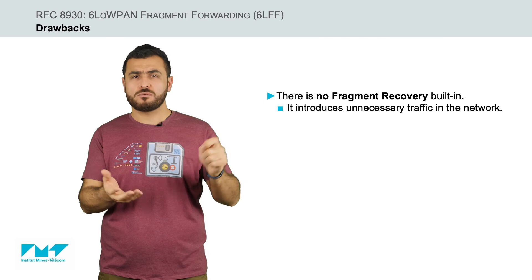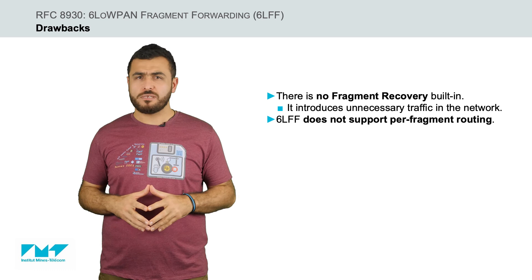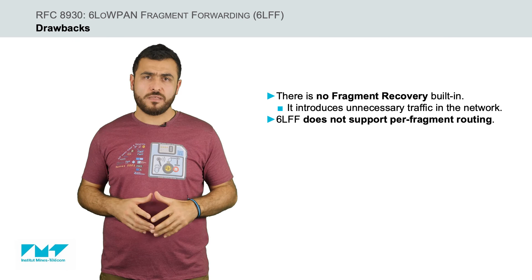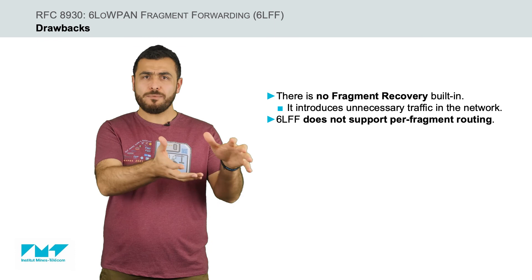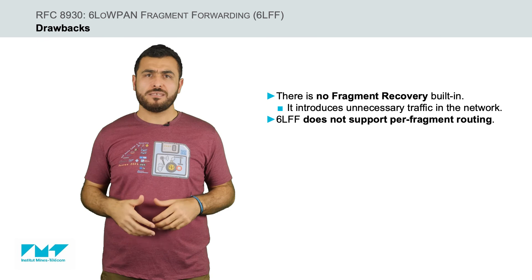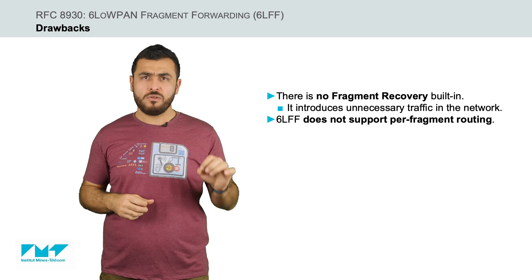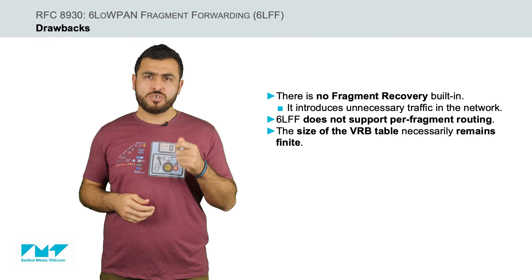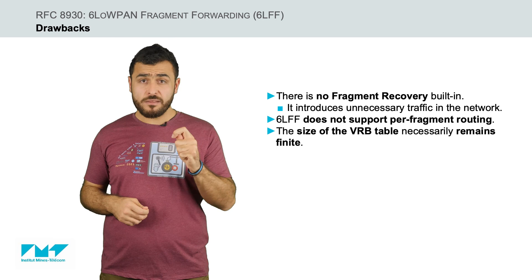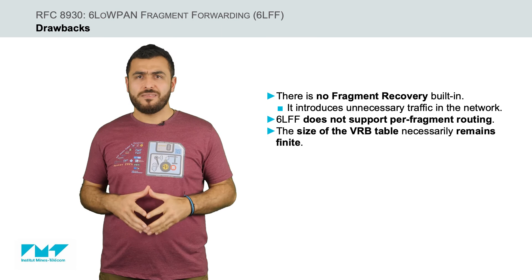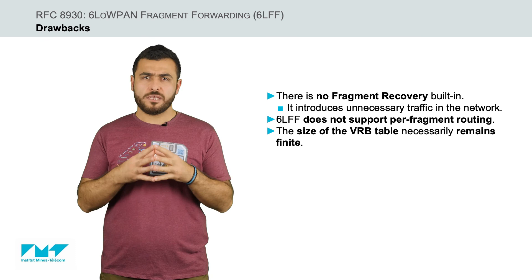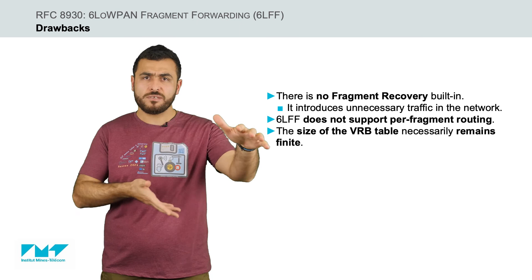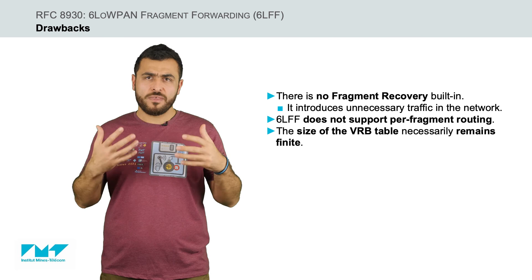Next, 6LoWPAN fragment forwarding does not support per-fragment routing. Since only the first fragment contains the IPv6 header and thus the IPv6 destination address, all subsequent fragments must follow the same path toward the destination as the first fragment. A side effect is that the first fragment must always be forwarded first. Finally, even though each entry reserves a small footprint in the VRB table, there is a probability for IPv6 packets to be dropped. Indeed, the size of the VRB table necessarily remains finite. Thus, in the extreme case where the number of IPv6 packets concurrently traversing an intermediate node is larger than the number of entries in its VRB table, IPv6 packets are dropped.